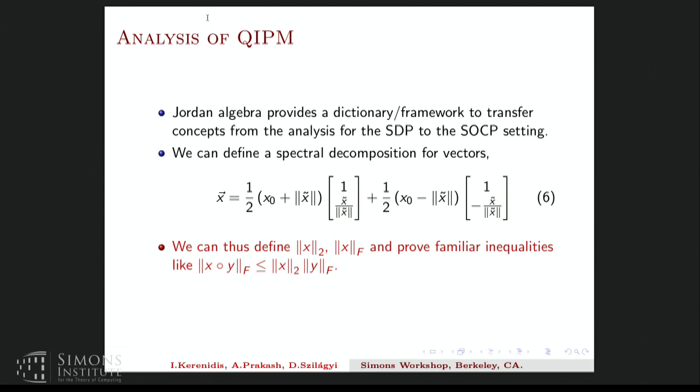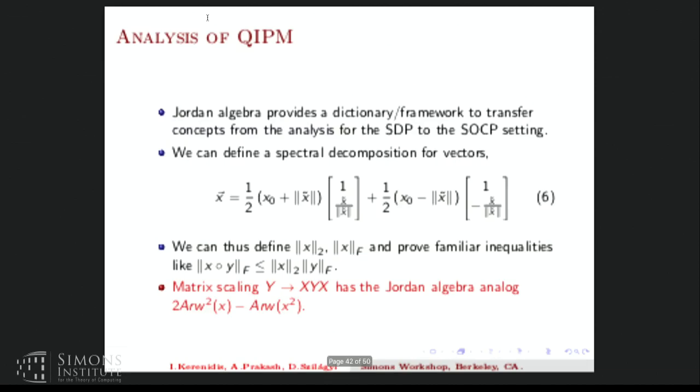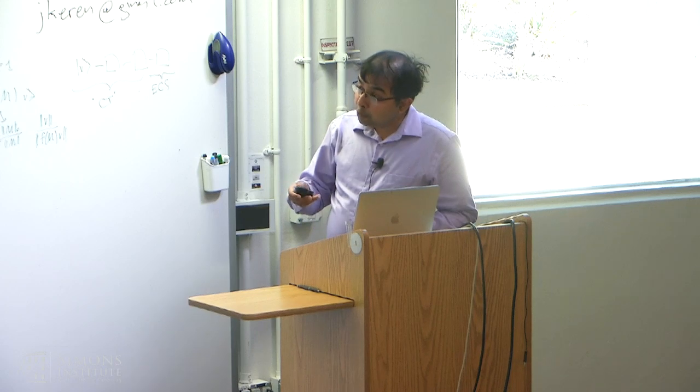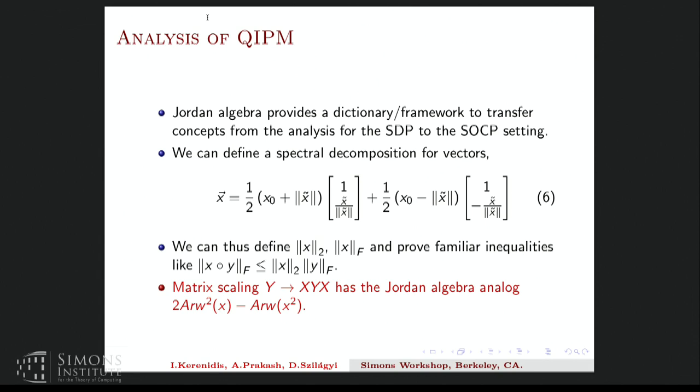And we can even find analogues of the familiar inequalities like ||XY||_F is less than ||X||_spectral times ||Y||_F. And similarly like for the analysis one has to find analogues of all the matrix quantities that one uses in the SDP analysis. So for example in the SDP analysis one uses matrix scaling Y goes to XYX and this has a Jordan algebra analog of two arrow squared X minus arrow X squared. So by making this dictionary one can translate the approximate IPM analysis for the SDPs to the SOCP setting and get similar results.